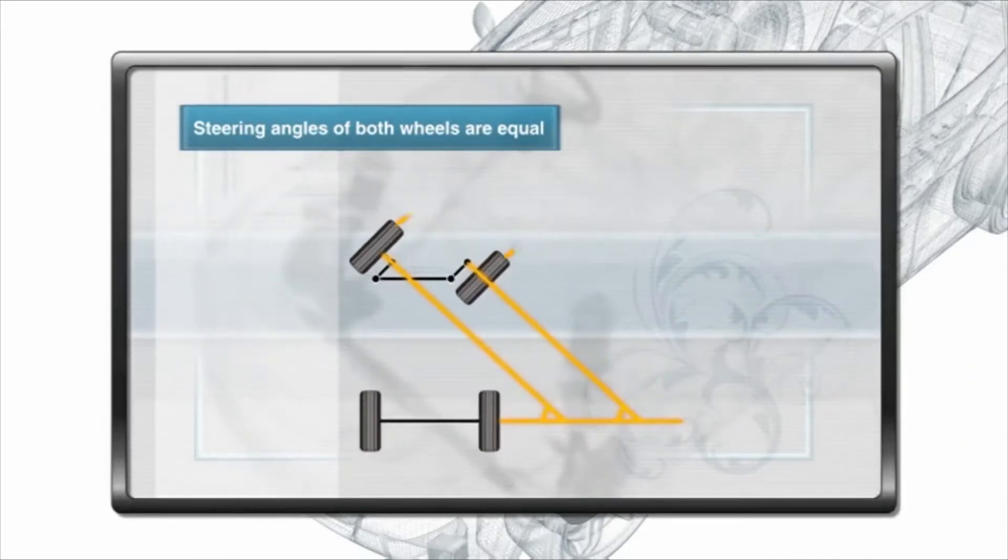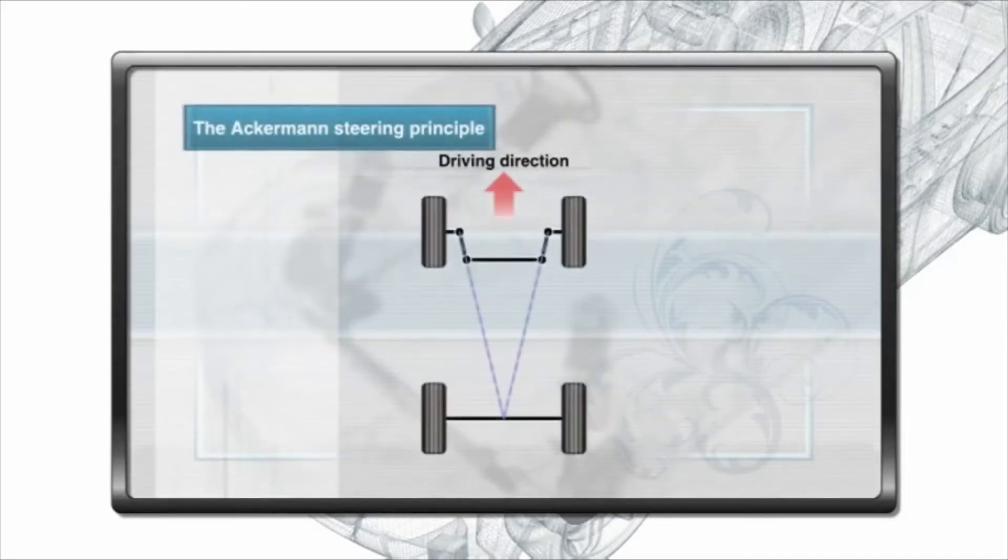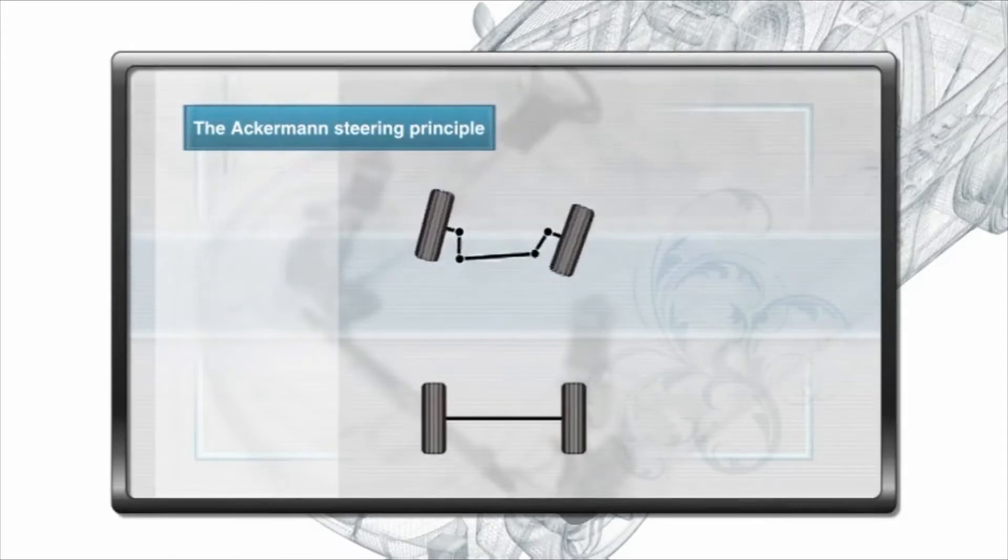The Ackerman steering solves this problem by allowing both left and right wheels to travel in concentric circles.